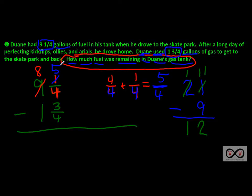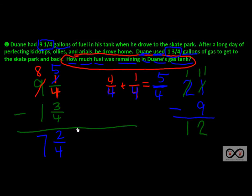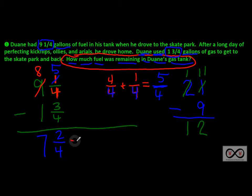Now we've got five-fourths minus three-fourths, and we can do that. Five-fourths minus three-fourths gives us two-fourths. Then we subtract the whole numbers: eight minus one equals seven. So our result is seven and two-fourths. We also notice something interesting — two-fourths is equivalent to one-half, because any time the numerator is half the denominator, the fraction equals one-half. So seven and two-fourths is equivalent to seven and one-half.